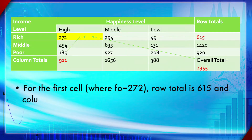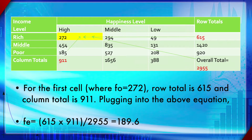For example, for the first cell where FO is 272, the row total is 615 and the column total is 911. Plugging into the equation: FE = (615 × 911) / 2955, which gives 189.6. That is the expected frequency for just the first cell, and you must repeat this same calculation for all remaining cells.